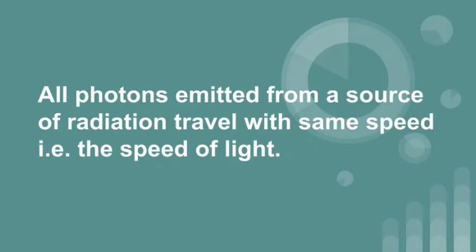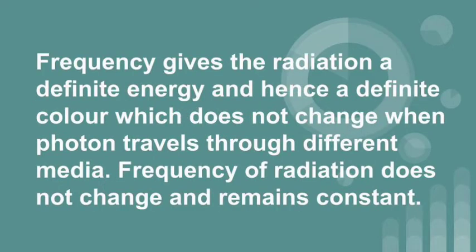All photons emitted from a source of radiation travel with the same speed that is the speed of light. Frequency gives the radiation a definite energy and hence a definite colour which does not change when photon travels through different media. It means frequency of radiation does not change and remains constant.